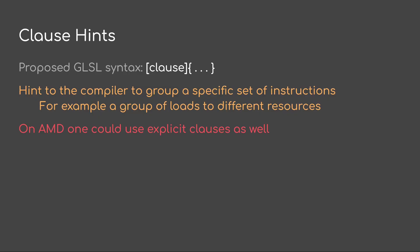Another nice thing to have would be clause hints. This would have a simple syntax — just [[clause]] with curly brackets for the scope. This would define a set of instructions that you want to run at the same time. Typically you'd use this to clause out a bunch of loads, and on AMD they could actually use explicit clauses because there is a clause instruction.